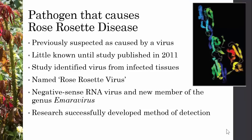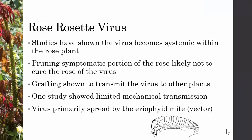Rose rosette disease is actually caused by a virus called rose rosette virus. In 2011, scientists discovered and properly described the disease and the virus. Studies have shown that the virus becomes systemic within the rose plant, so pruning symptomatic portions of the rose will likely not cure it. Grafting has been shown to transmit the virus, and in some studies, limited mechanical transmission has occurred. Primarily, the virus is spread by an eriophyid mite, which is called the vector of this virus.